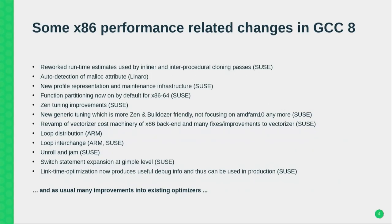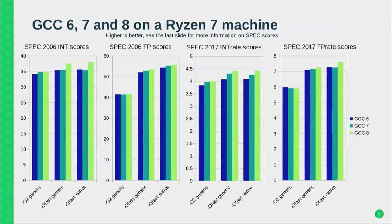These are just some of the optimization improvements we have in GCC 8. We'll be going through some of them — I just want to show that there are many. I started a little bit late so I'll skip that slide and get directly to the SPEC numbers.